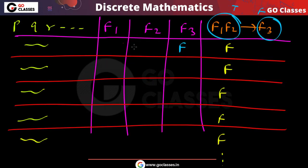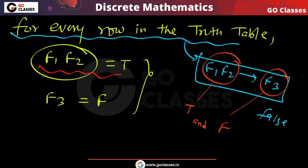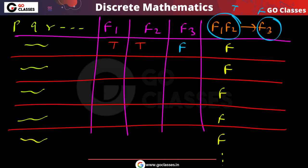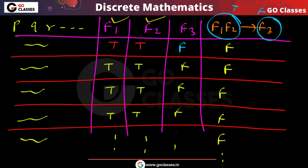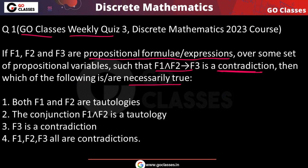Since f1 ∧ f2 is true in every row, f1 must be true and f2 must be true in every row — whatever row you take, they must both be true. And f3 is false in every row. So finally, f1 must be a tautology, f2 must be a tautology, and f3 must be a contradiction.